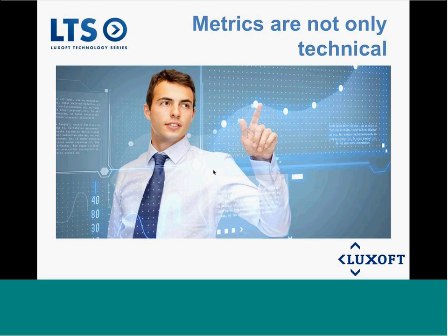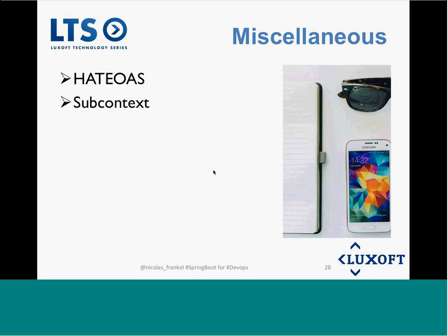What I showed is only the tip of the iceberg — you can go much, much further. One thing: if you're a REST-oriented developer, you might notice that the actuator doesn't fully respect REST principles, because you need to know the endpoint URLs upfront. This is completely opposite to what REST should be — you should discover links dynamically. That's where HATEOAS comes in.